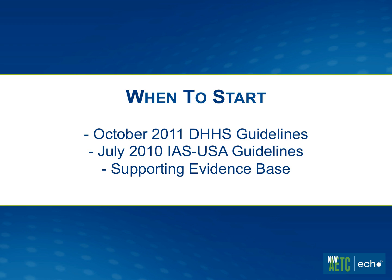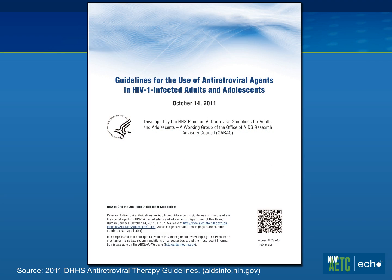I do want you to be aware of a second set of guidelines called the IAS-USA guidelines, last published in July 2010, which differ in subtle but important ways. I'm going to gloss over the supporting evidence base. This document was last published in October 2011 and is constantly being updated. The best source is to go straight to the website, AIDSinfo.nih.gov, because interval changes are updated on the web-only document.